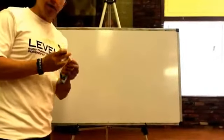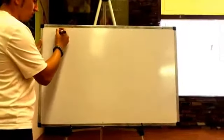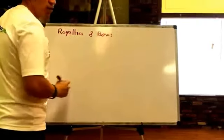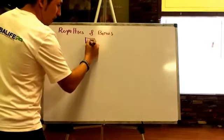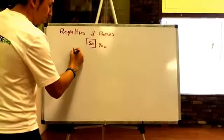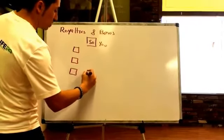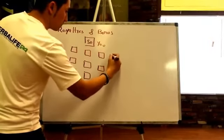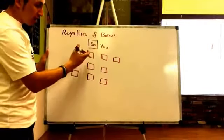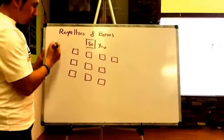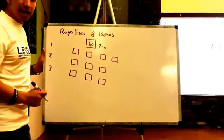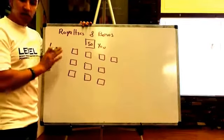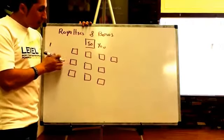Let's continue with the second part of the training video. Let's focus on royalties and bonus. So let's say this is you at 50%. You have a group of 10 supervisors — it doesn't matter if they are your first, second, or third line. The company pays you for first, second, and third line. The supervisors are doing business or ordering products for personal use, and all the volume points they make count for royalties.